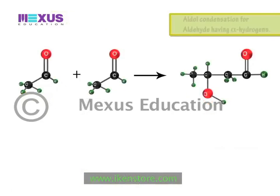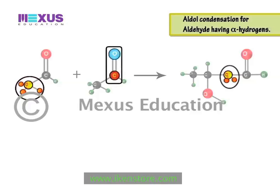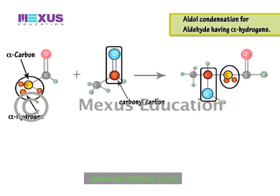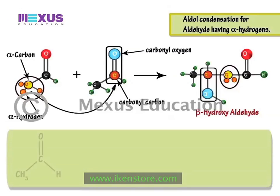In every case, it is the alpha carbon and alpha hydrogen atoms of one molecule that add to the carbonyl carbon and oxygen atom respectively of the second molecule. The illustration here shows how the alpha carbon of one aldehyde molecule adds to the carbonyl carbon of another aldehyde molecule, resulting in the beta-hydroxy aldehyde.